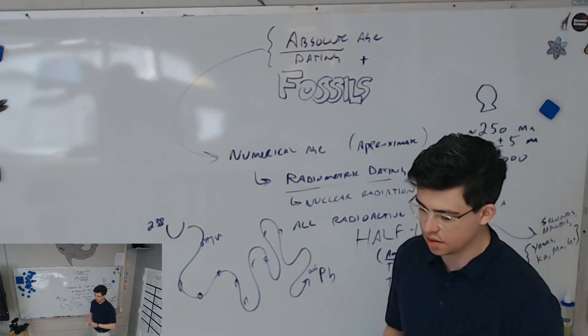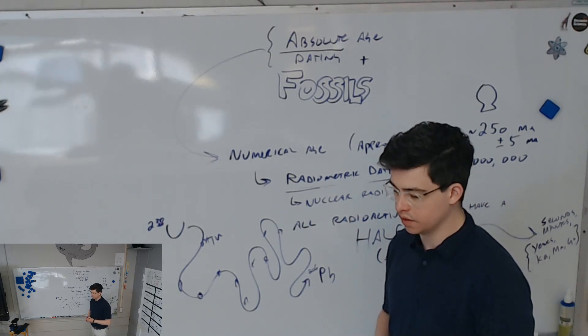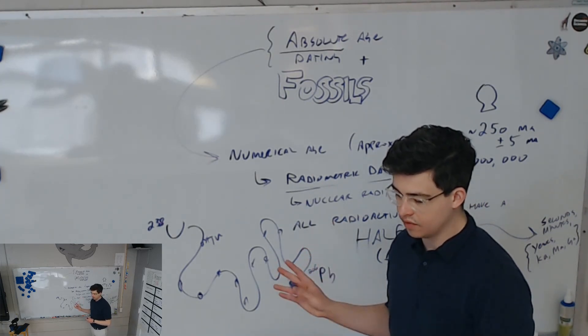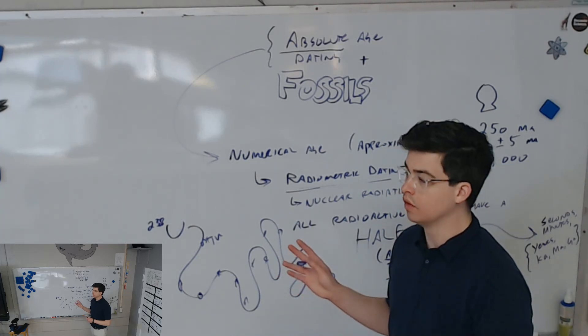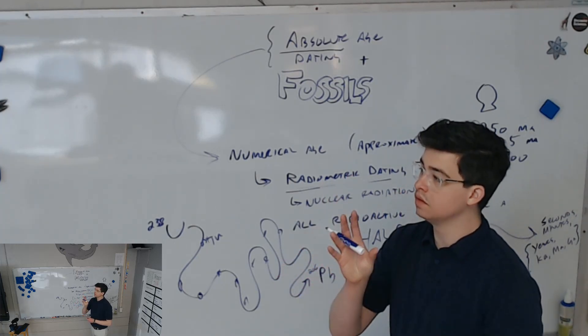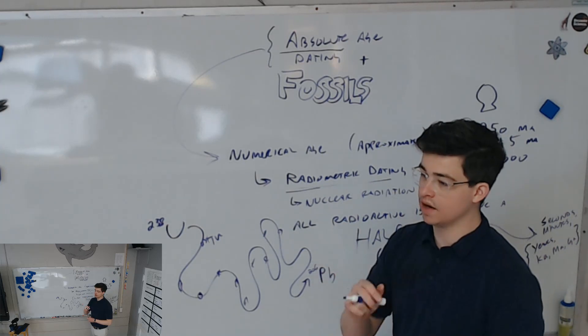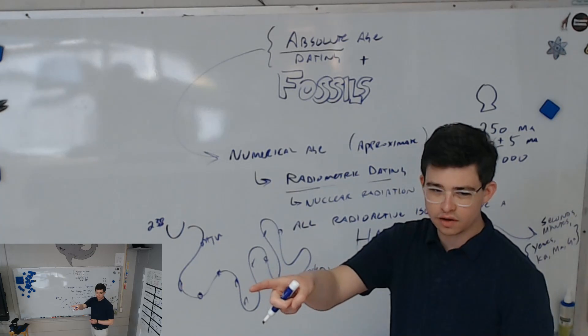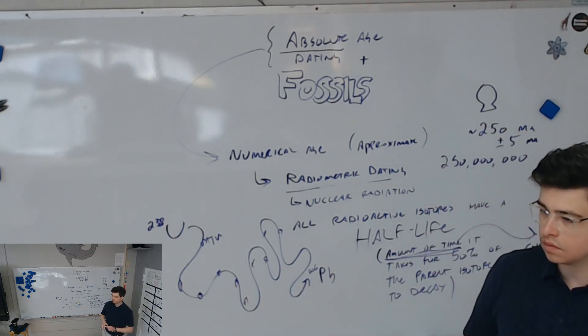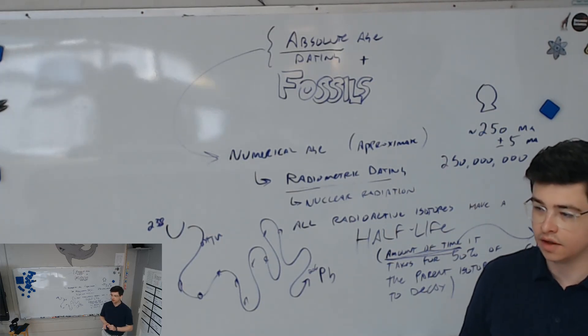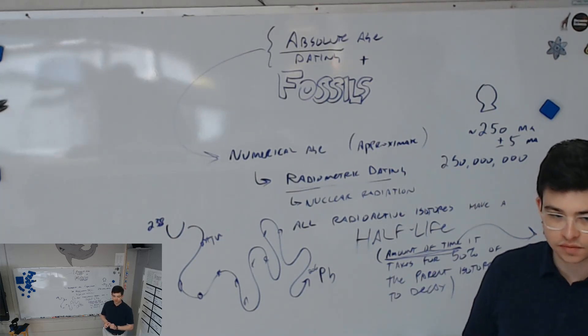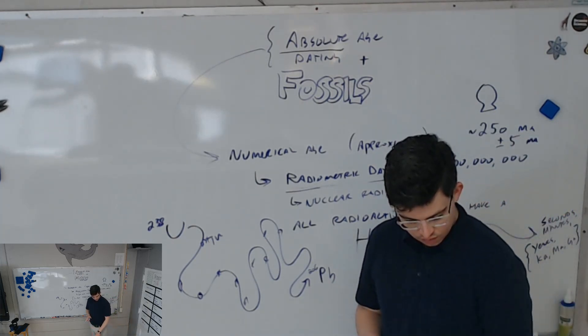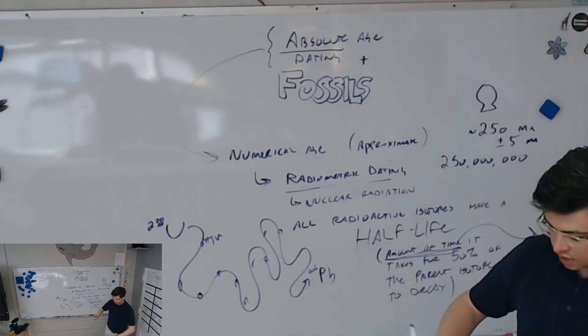It gets a little bit more complicated because there's an equation that we use to determine, because almost never is it 50-50. There is an equation that tells us how much time has passed if we found, for instance, 83% parent and 17% daughter. It's the half-life times the log of the mass that's left over divided by the mass initially there, log base 0.5. You know about logarithms? Algebra 2.